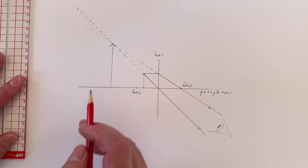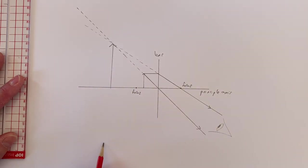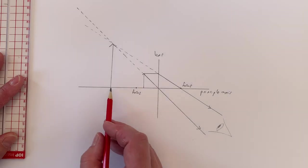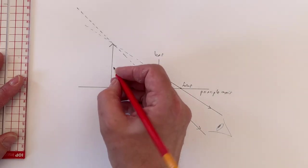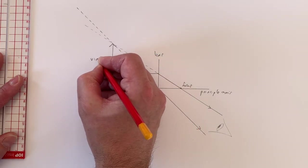Now, this image is magnified. It's much bigger than the object and furthermore, it's not a real image. It's what we refer to as a virtual image.